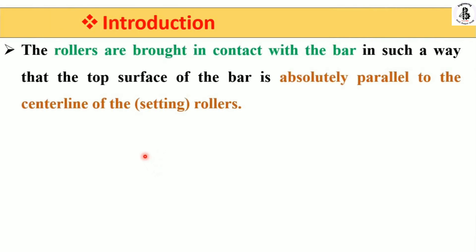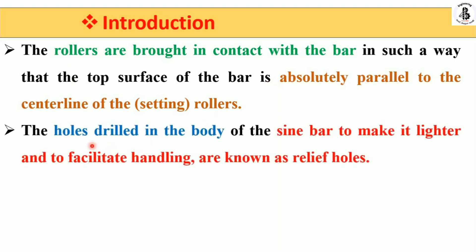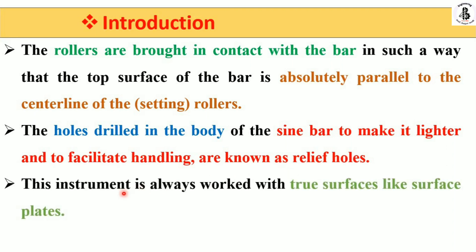The rollers are brought into contact with the bar in such a way that the top surface of the sine bar is absolutely parallel to the center line of the setting rolls. The holes drilled into the body have different shapes. These relief holes make the sine bar lighter, facilitate handling, and reduce weight. This instrument always works with true surfaces like surface plates.